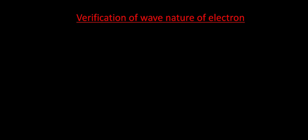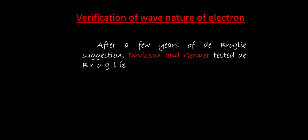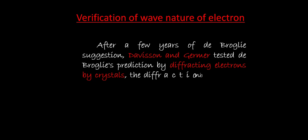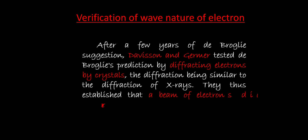Regarding verification of the wave nature of the electron: De Broglie gave a hypothesis, but the verification was done by Davisson and Germer. After a few years, they tested De Broglie's prediction by diffracting electrons through a crystal. The diffraction was similar to X-ray diffraction, establishing that a beam of electrons does indeed possess wave properties.